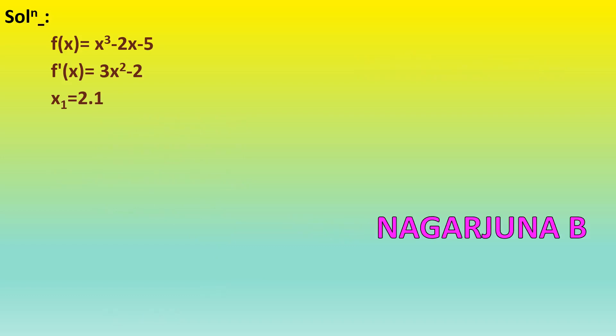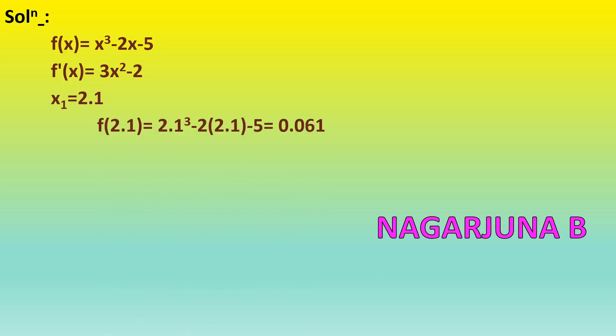Now we move on to the second iteration. x₁ = 2.1, so first find f(2.1) and f′(2.1). f(2.1) = 2.1³ − 2×2.1 − 5 = 0.061. f′(2.1) = 3×2.1² − 2 = 11.23.